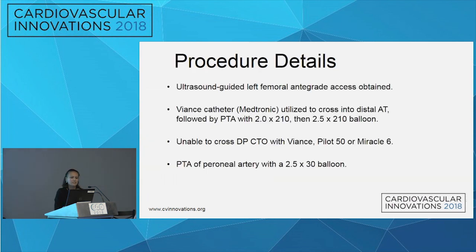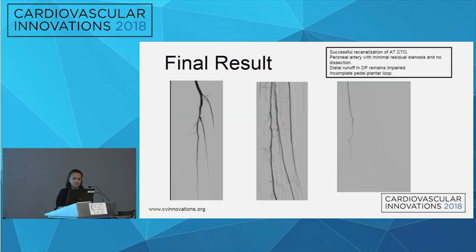For the intervention, we did ultrasound-guided left femoral antegrade access. We used a VEANCE catheter to cross into the distal anterior tibial, and it crossed fairly easily — we were surprised. Followed by angioplasty with a 2.0, then a 2.5 to 2.10 balloon. Unfortunately, we were unable to cross the DP CTO with the other VEANCE, Pilot 50, or Miracle 6. We then ballooned the peroneal artery with a 2.5 by 30 balloon.